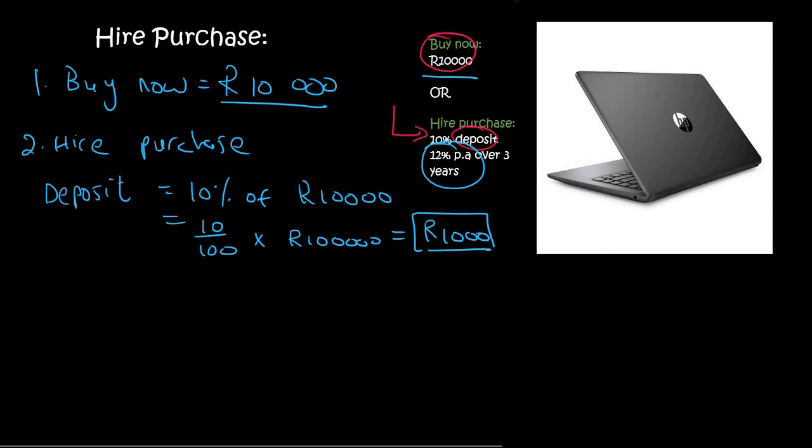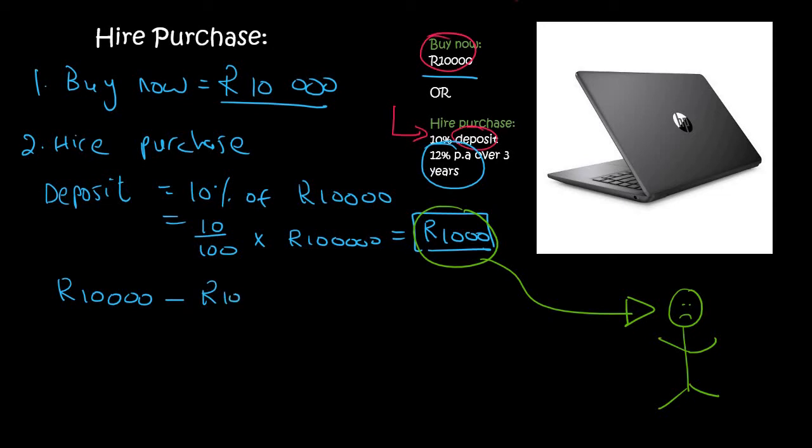So you need to give the shop owner 1,000 Rand. So please imagine yourself handing over the 1,000 Rand to the shop owner. So let's say this is the shop owner over here, but he's a little bit upset with you because you haven't given him the full amount. So you've given him 1,000 Rand. So how much do you still owe on the laptop? Well, that laptop is 10,000 Rand. And if you minus the 1,000 Rand, you still owe this guy 9,000 Rand.